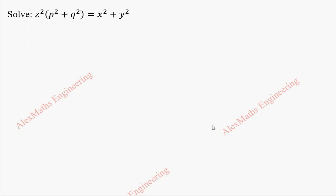Hi students, this is Alex here. In this video, we are going to solve the given partial differential equation. When we multiply this, we get z squared p squared plus z squared q squared, and on the other side we have x squared plus y squared.